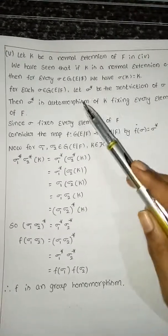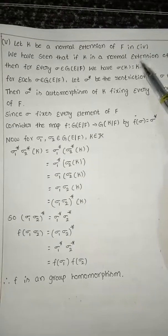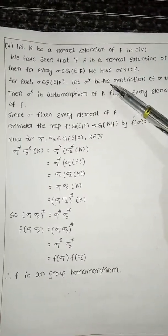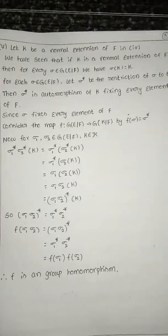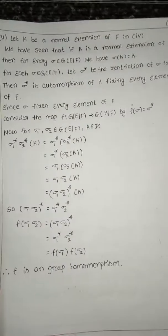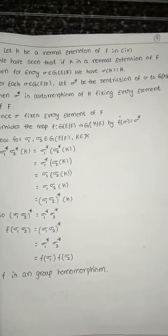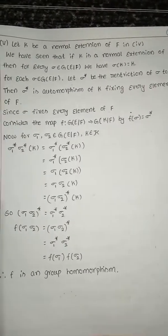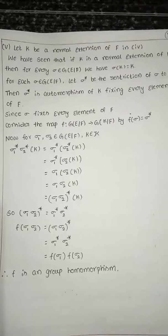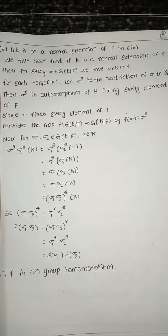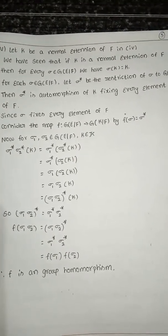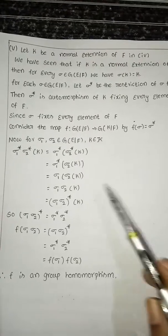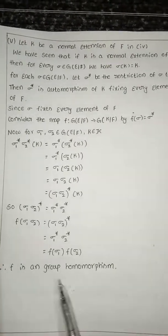For the fifth part, let K be a normal extension of F. From the proof of the fourth part, if K is a normal extension of F then for every σ in G(E/F) we have σ(K) = K. For each σ in G(E/F), let σ* be the restriction of σ to K. Then σ* is an automorphism of K fixing every element of F. Consider the mapping φ: G(E/F) → G(K/F) defined by φ(σ) = σ*. For σ₁, σ₂ in G(E/F), the composition gives us that φ is a group homomorphism.